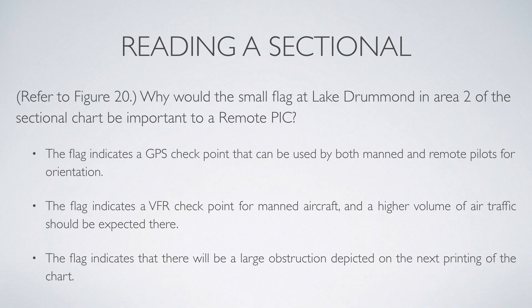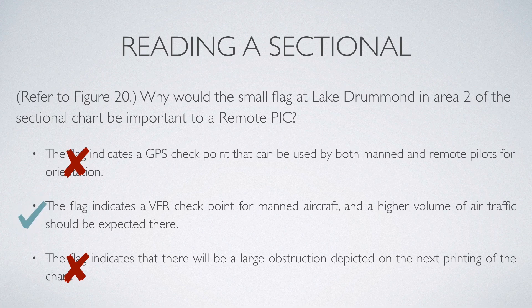The second choice says the flag indicates a VFR checkpoint for manned aircraft, and a higher volume of aircraft should be expected there. That seems accurate because this map is a VFR sectional, and a VFR checkpoint makes sense. It also makes sense that a lake would be a checkpoint for manned aircraft, as they use ground references when flying. So eliminating the first and third options leaves us with the second option — and this is our correct answer.